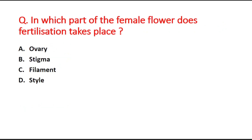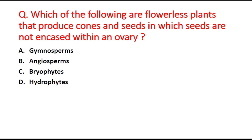Next question: in which part of the female flower does fertilization take place? Option A is ovary, option B is stigma, option C is filament, and option D is style. The right answer is option A, ovary.